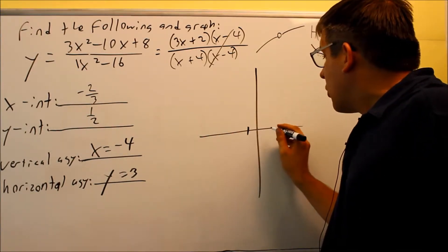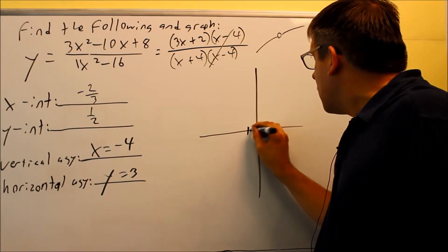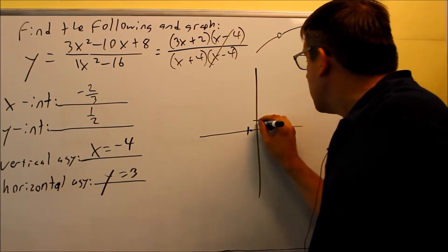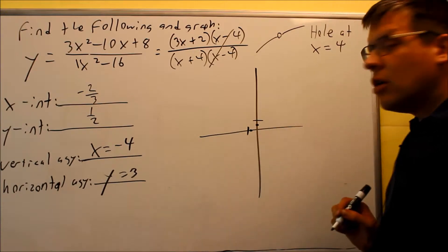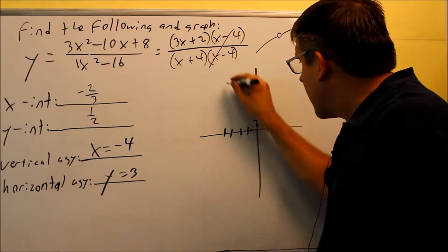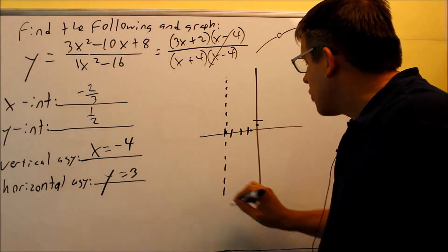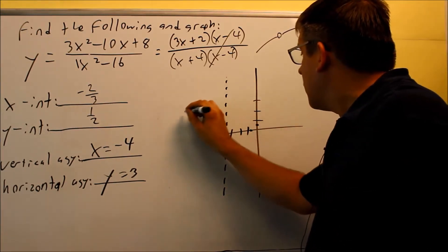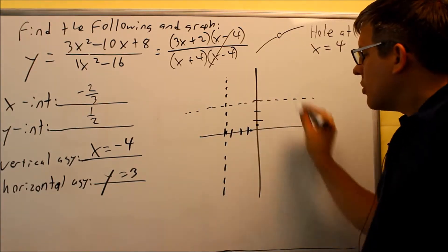Our x-intercept, I have x is equal to negative two-thirds which is going to be about right there. The y-intercept is going to be at positive one-half, so it'll cross through right there. I have a vertical asymptote at negative four, so here's my vertical asymptote. My horizontal one is going to be at three, so it's going to look like this. So this is the whole entire graph that's set up.